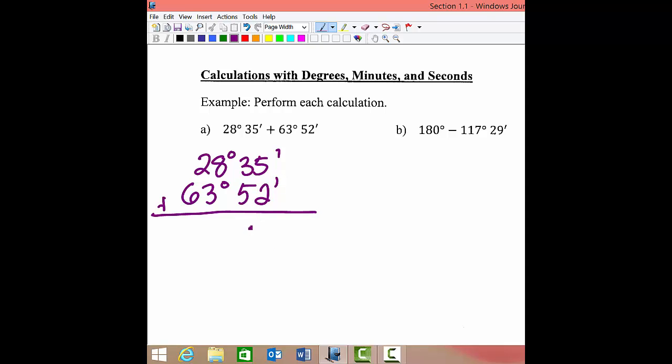It looks like we have 87 minutes, and how many degrees do we have? It looks like we have 91 degrees. Now, 87 minutes—we know that every 60 minutes represent one whole degree.